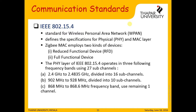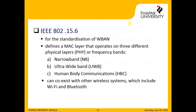The communication standards involved are IEEE 802.15.4, which specifies the physical and MAC layer specifications and operates in three different frequency bands. Then comes IEEE 802.15.6, which is exclusively designed for the standardization of Wireless Body Area Networks, and its physical layer also operates in three frequency bands. Because of communication across three different bands, it can co-exist with other wireless systems including Wi-Fi and Bluetooth.